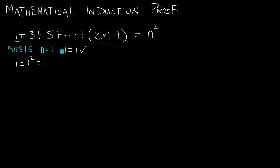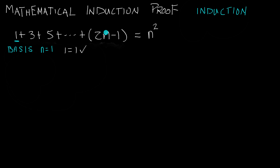Now that we've shown the basis case is valid, let's move on to the next step of the mathematical induction proof. The next step is what we call the induction step. For the induction step, we're going to choose some number for n, and we're going to have that be some arbitrary value — n equals some value k.